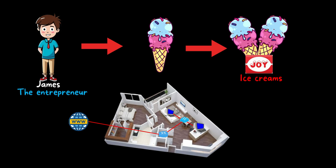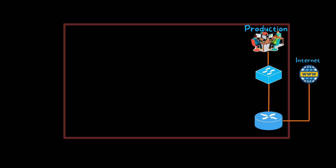By his hard work and the quality of the ice cream, James got a lot of sales. He understood that this home-based office was not enough to manage day-to-day operations and he needed more people. He decided to lease an office space outside his home. He shifted his business to a leased office with a production team using multiple computers all connected to a network switch and a router for internet access.